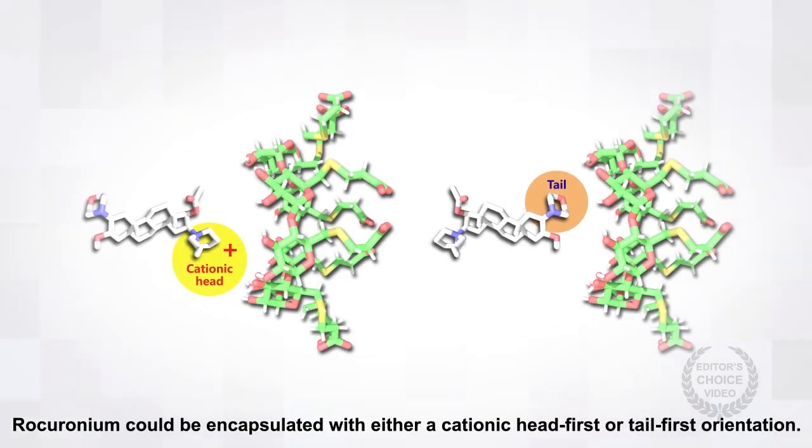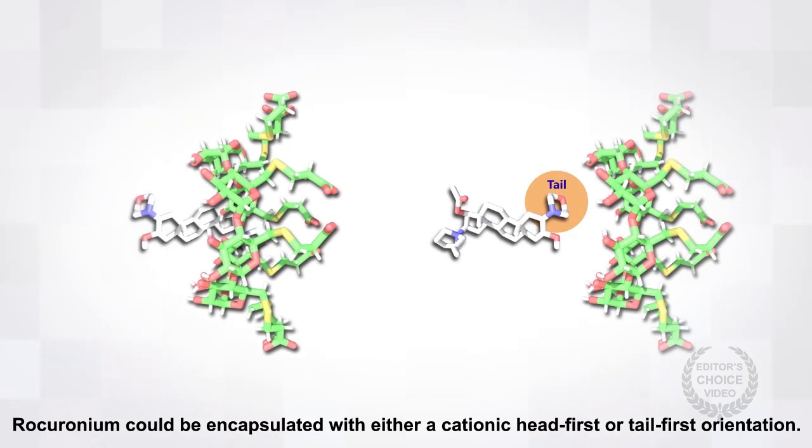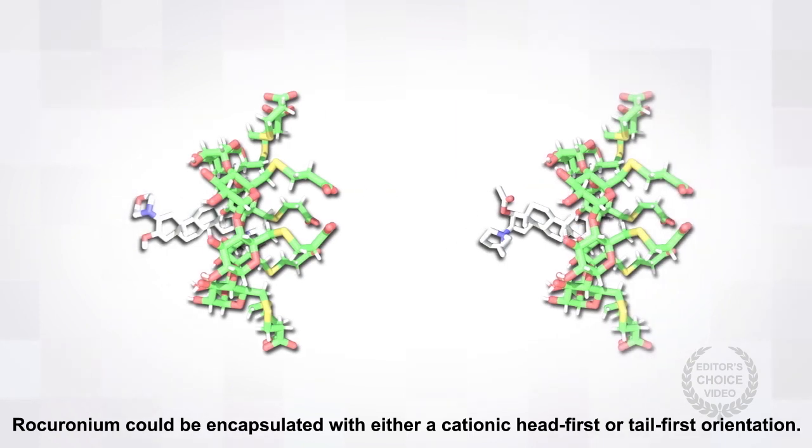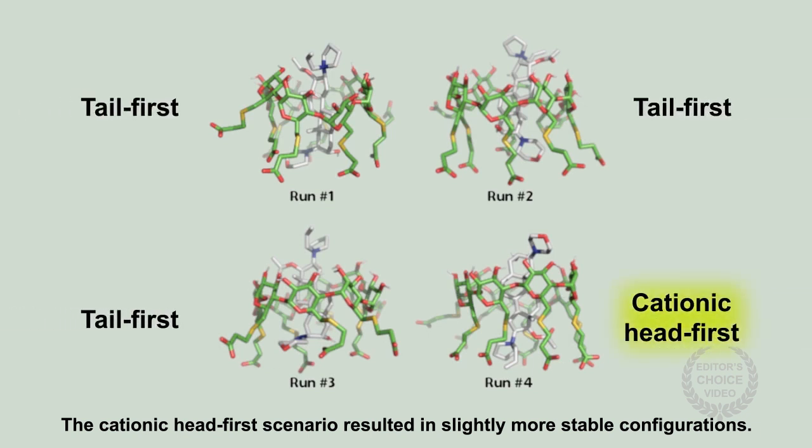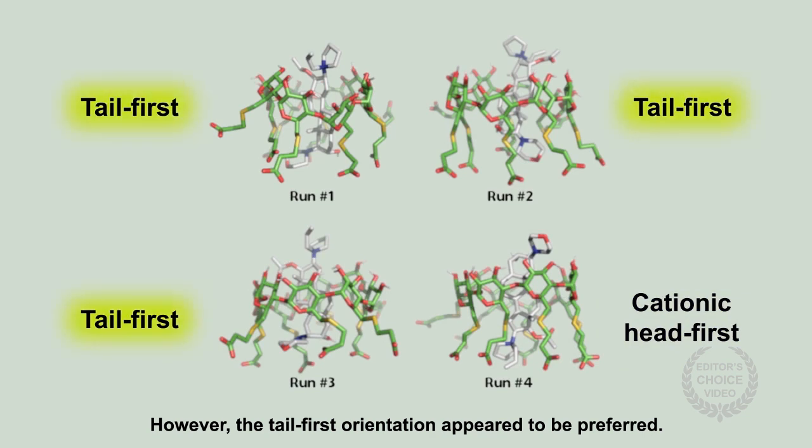Rocuronium could be encapsulated with either a cationic head-first or tail-first orientation. The cationic head-first scenario resulted in slightly more stable configurations. However, the tail-first orientation appeared to be preferred.